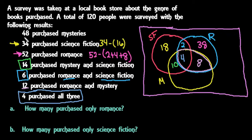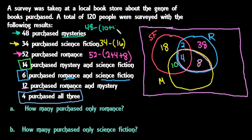For the last circle, 48 purchased mysteries. Inside this entire circle we need a total of 48. We take 48 minus the 10 plus 4 plus 8, which is 22. So 48 minus 22 gives us 26 who purchased only mystery. Checking: 26 plus 8 plus 4 plus 10 equals 48.